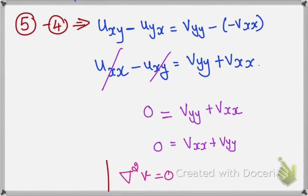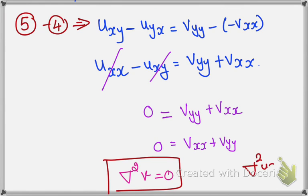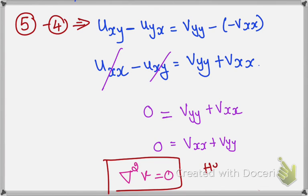Therefore, we have obtained our answer. We had to prove that del squared U equals 0 and del squared V equals 0, and we proved both terms. Our problem is complete. Hence proved. Thank you.